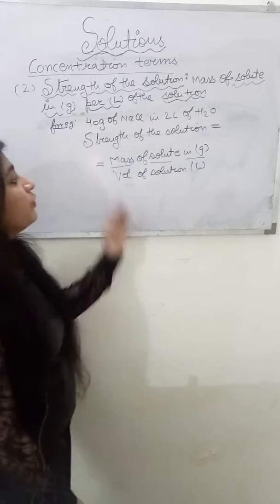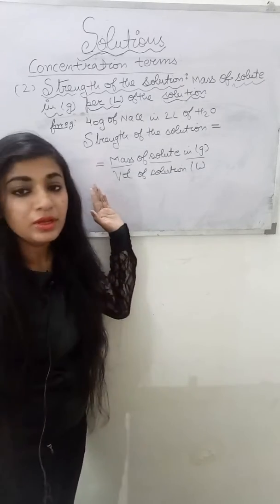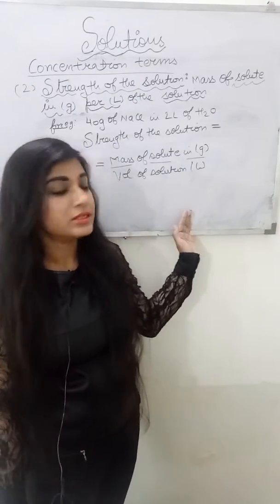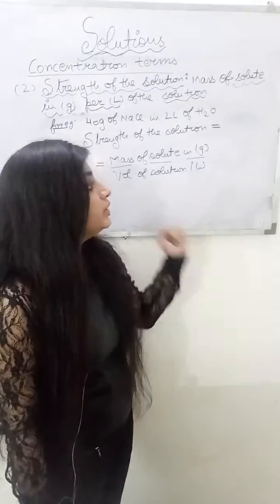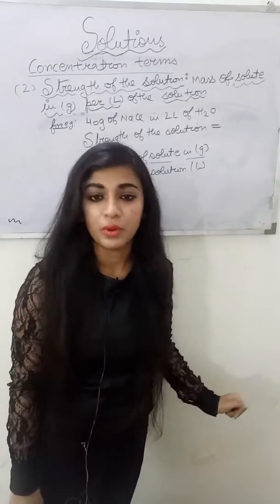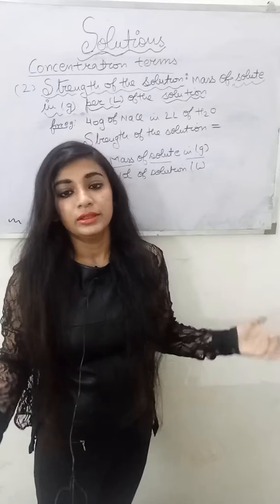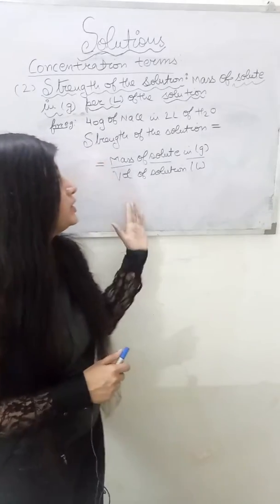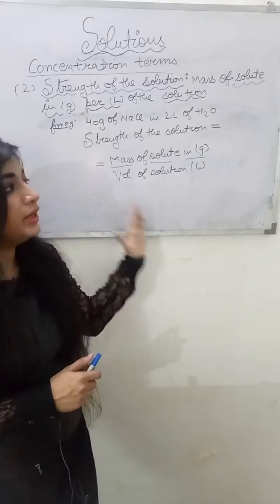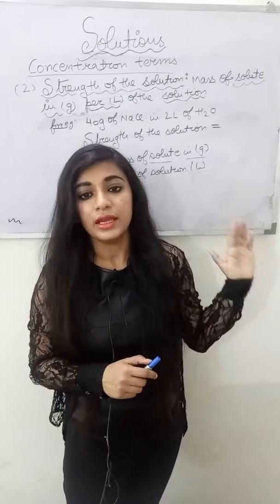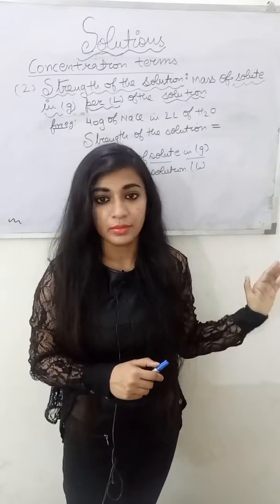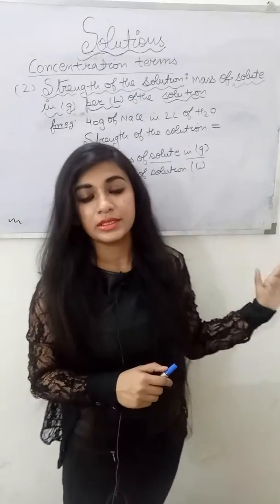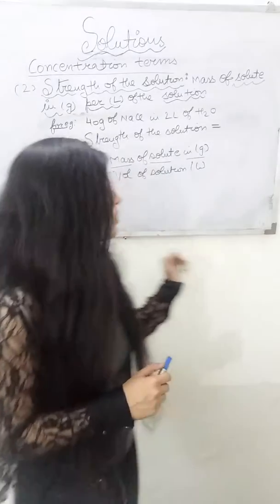For example, 40 grams of NaCl is present in 2 liters of water. Here, 40 grams is the mass of the solute in grams, and the solvent volume is present in liters.